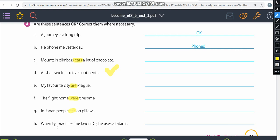Letter H. When he practices taekwondo, he uses a tatami. Both verbs are right, so you're going to check it's okay. You can write okay in front of it.